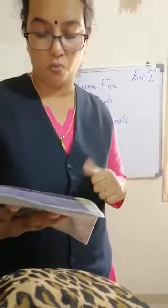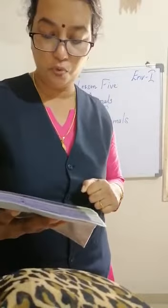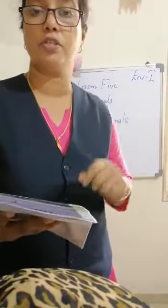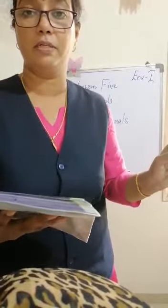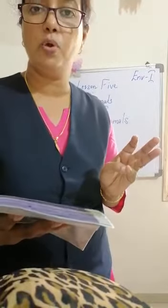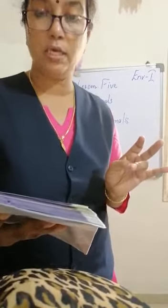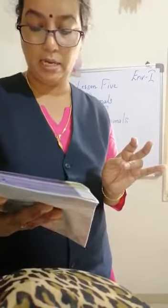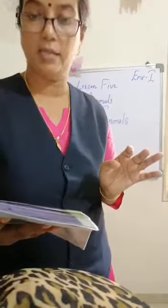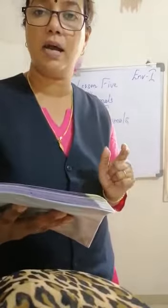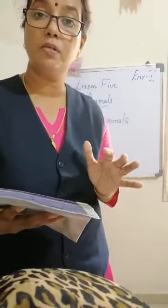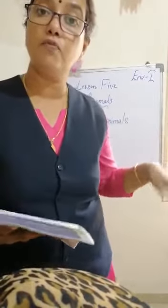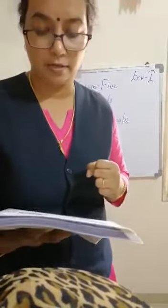Some birds are heavy and therefore cannot fly — they can only run and walk. For example, emu — E-M-U — penguin — P-E-N-G-U-I-N — and ostrich — O-S-T-R-I-C-H. I want you to underline all three birds. Woh bahut bhaari hai toh woh ud nahi sakte — they can only walk and run.